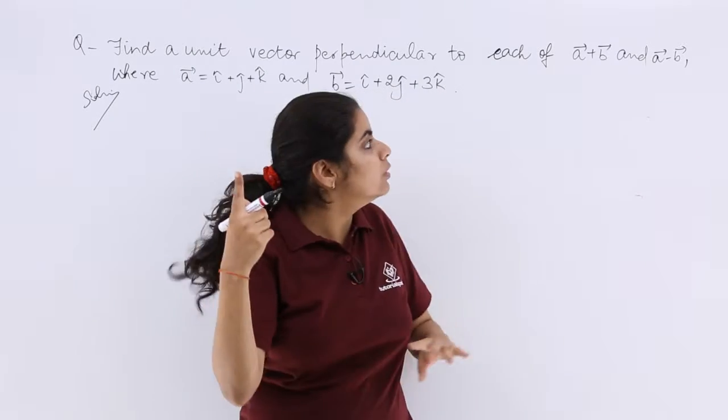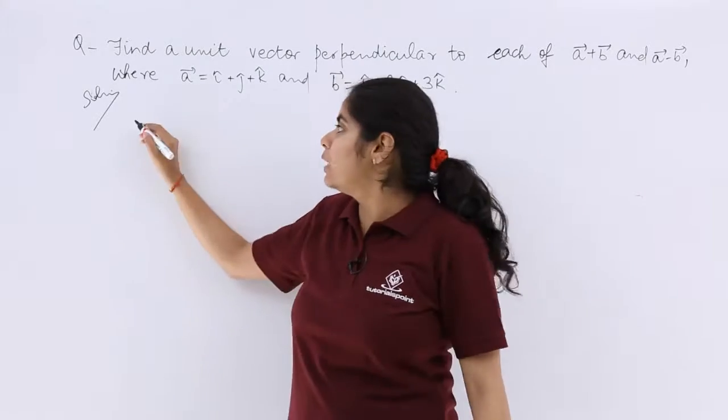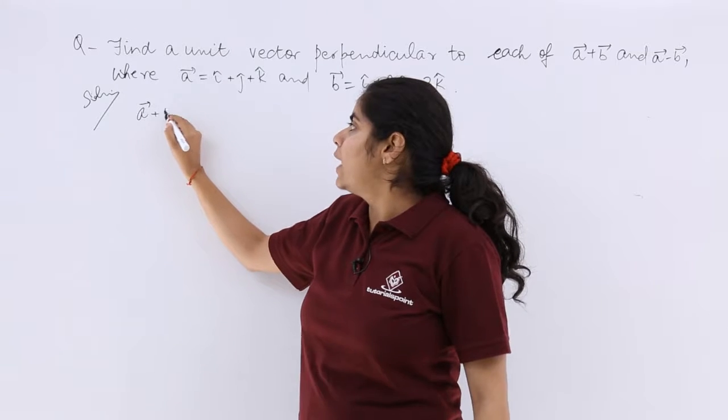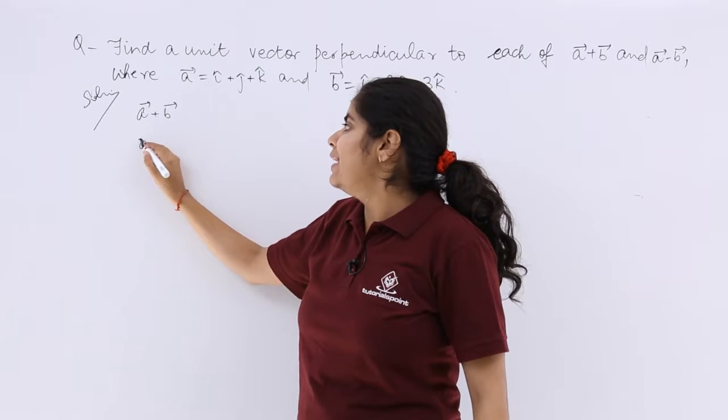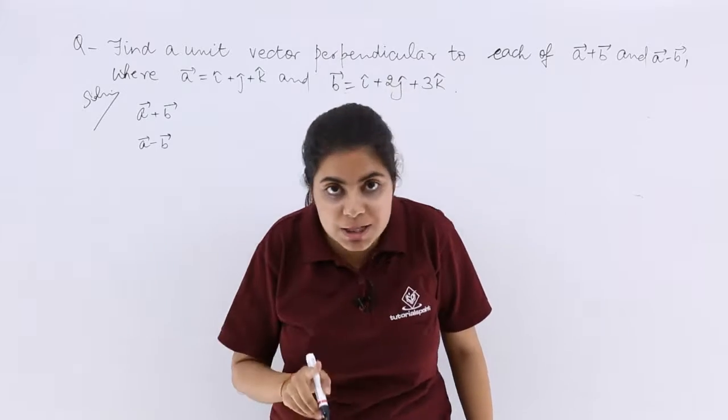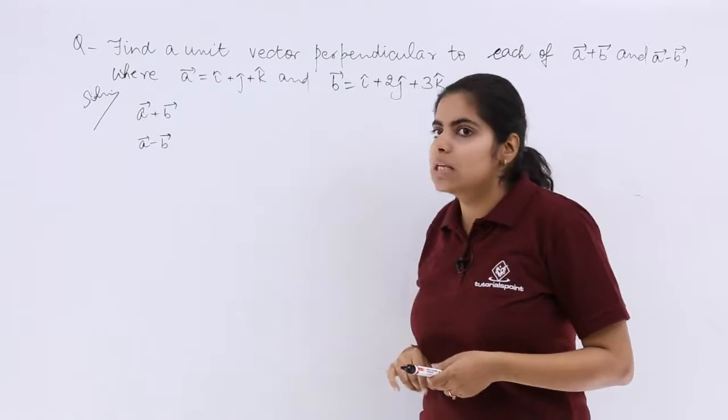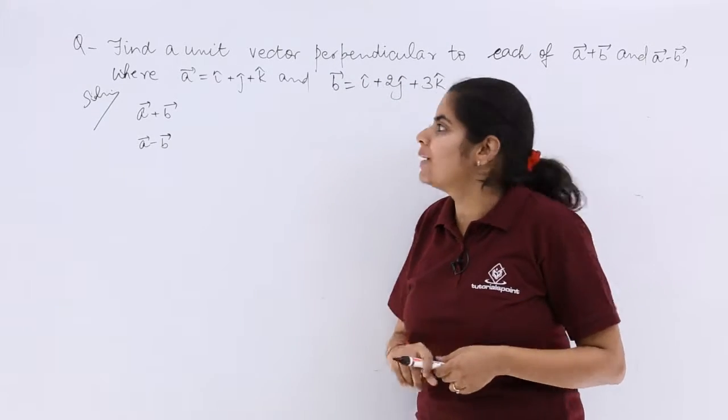Now perpendicular to a plus b and a minus b, that means the cross product of a plus b and a minus b is needed. So for the cross product, first compute what is a plus b, then compute what is a minus b.